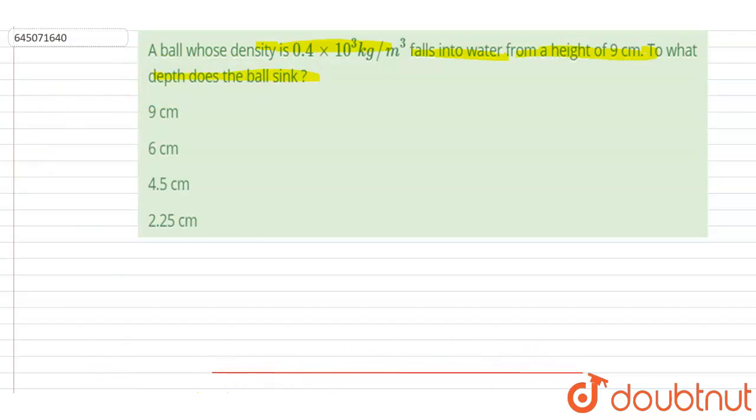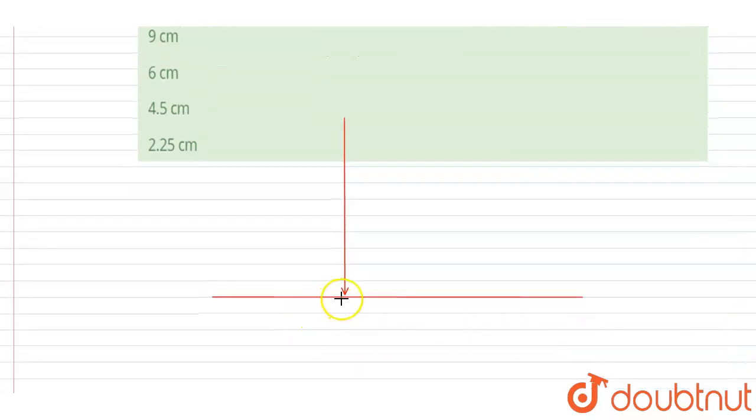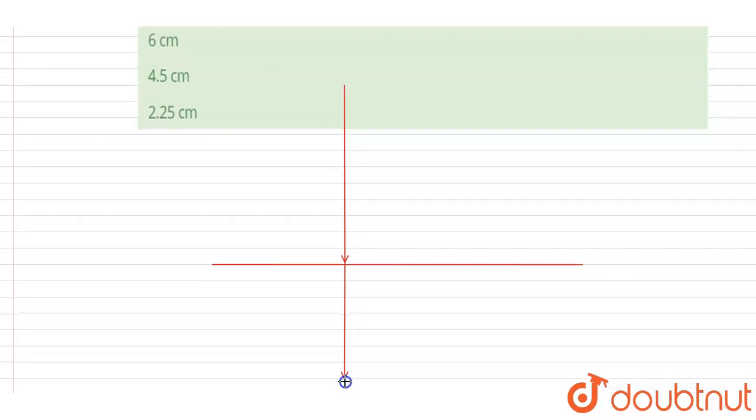surface and the ball falls on the surface from a height of 9 centimeter, and let's say it goes up to a depth of x centimeter more into the water. This is height